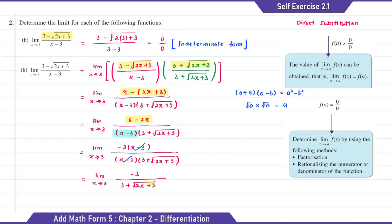So now if we substitute x with 3, we're going to get negative 2 over 6. Simplifying this, the answer is negative 1 over 3.